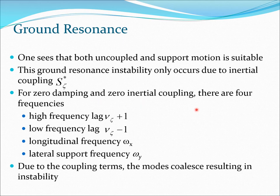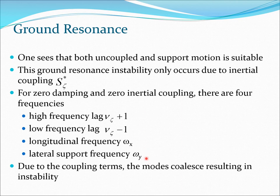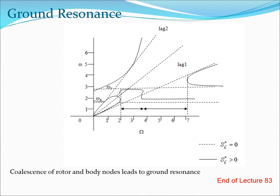For zero damping and zero inertial coupling, there would be four frequencies: high frequency lag at nu_zeta plus one, low frequency lag at nu_zeta minus one — where nu_zeta is the rotating frequency of the lag motion — longitudinal support frequency omega_x, and lateral support frequency omega_y. These are the four frequencies for zero damping and zero coupling. Generally both damping and coupling are present, and due to the coupling terms the modes coalesce, resulting in the instability known as ground resonance.